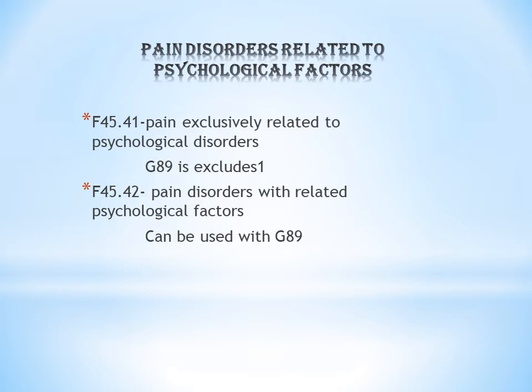The first code is F45.41: pain exclusively related to psychological disorders. Two types of pain are mentioned — physical pain and psychological pain. Physical pain comes from external injuries, something physically happening to the patient.